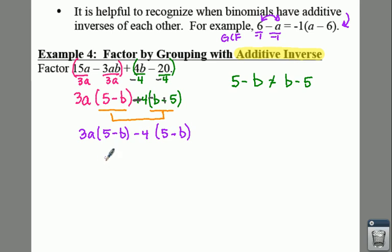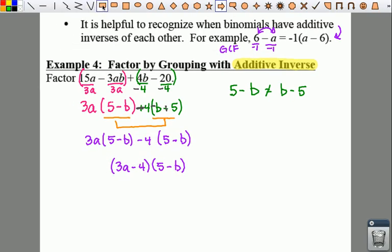What we're going to do is group our outside terms together. We're going to say 3a minus 4 times 5 minus b. And that is how you can factor with an additive inverse. Make sure you are looking for terms that are similar yet maybe just need a little tweaking with a negative.